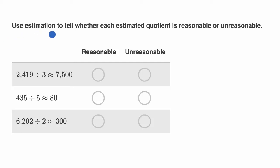We are told to use estimation to tell whether each estimated quotient is reasonable or unreasonable. So we have a bunch of estimated quotients here. Someone is estimating that 2,419 divided by three is roughly equal to 7,500. We have to figure out if that's reasonable or unreasonable, and then we have two more quotients to evaluate. Pause this video and see if you can figure it out on your own before we work through it together.